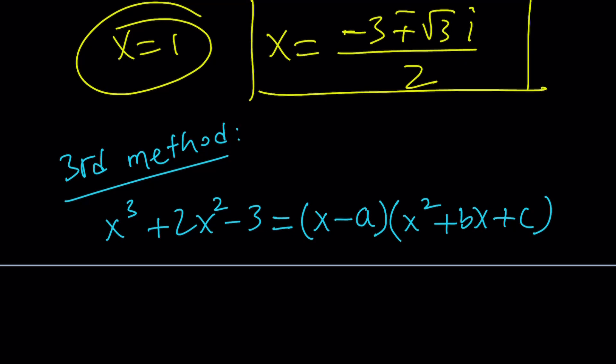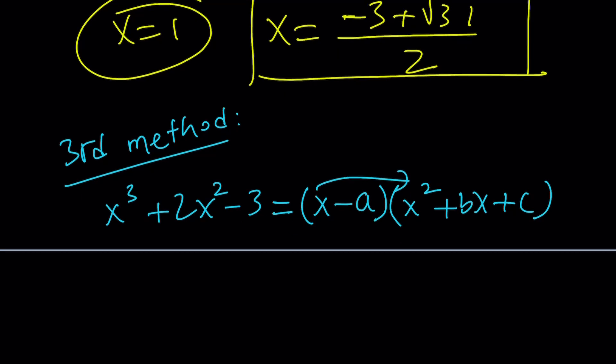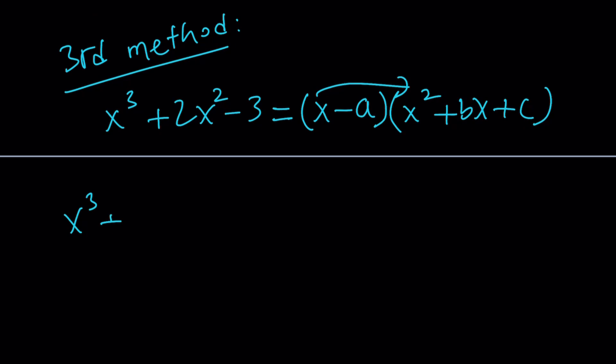And the constants, and why do I use negative a instead of plus a? It doesn't really matter. It's just going to give you the solution right away because x equals a is going to be one of the solutions. No big deal. You can also make it x plus a if this bothers you. Anyways, let's go ahead and distribute the right-hand side. That's going to give us x cubed plus bx squared plus cx minus ax squared minus abx minus ac equals 0. But I don't want to set it equal to 0 because I want to set it equal to x cubed plus 2x squared minus 3.